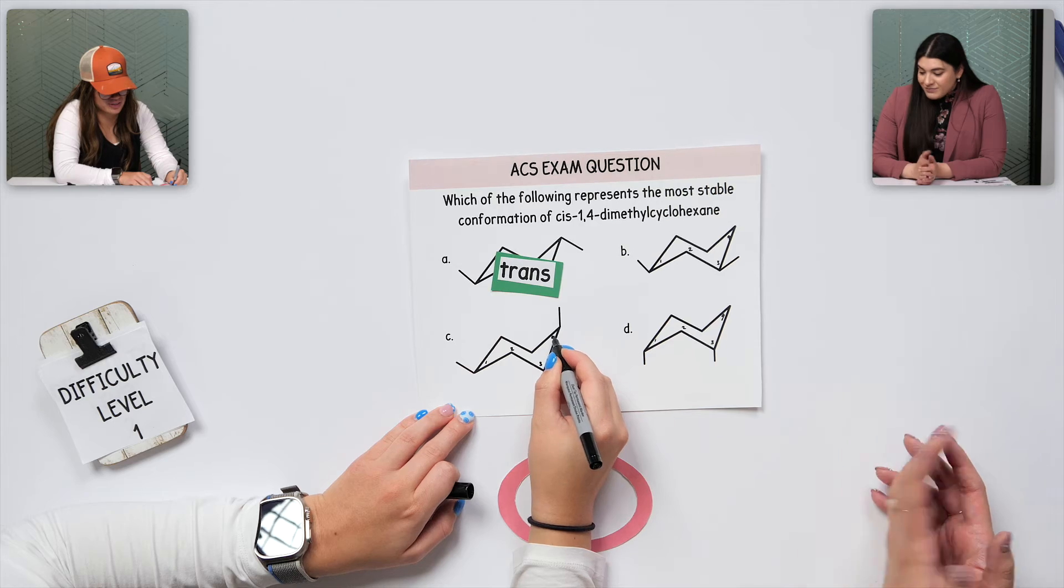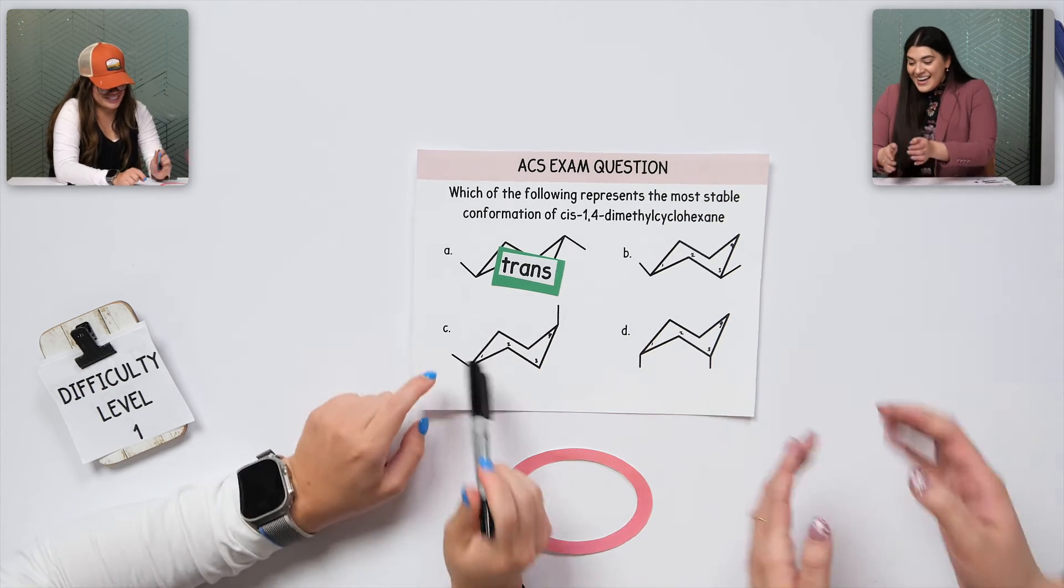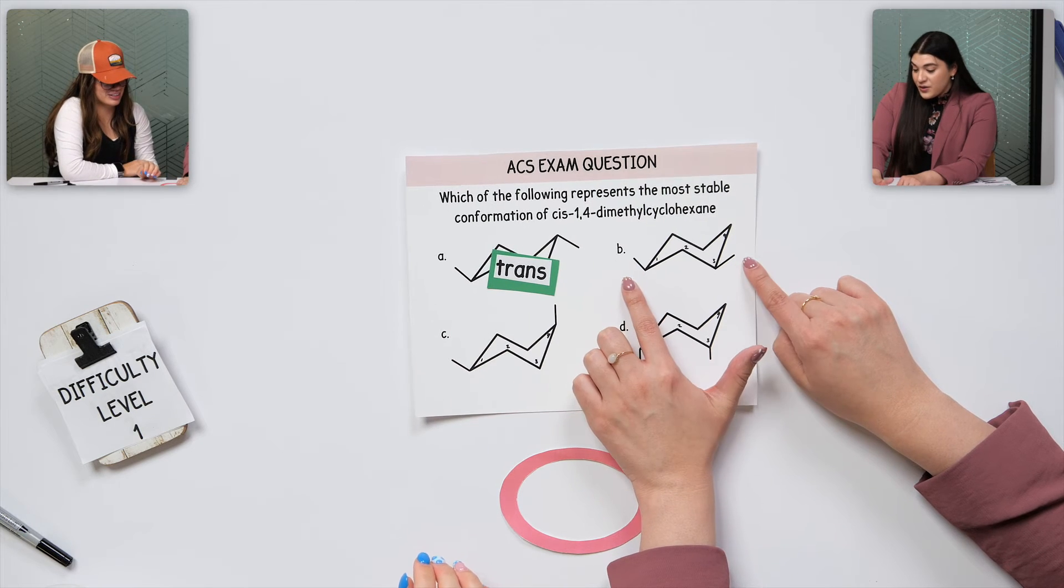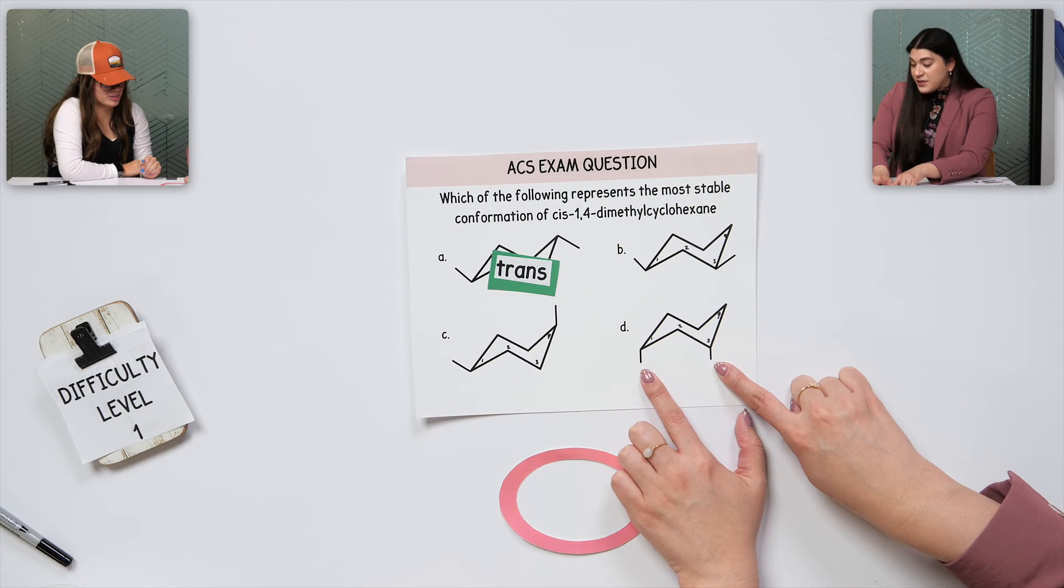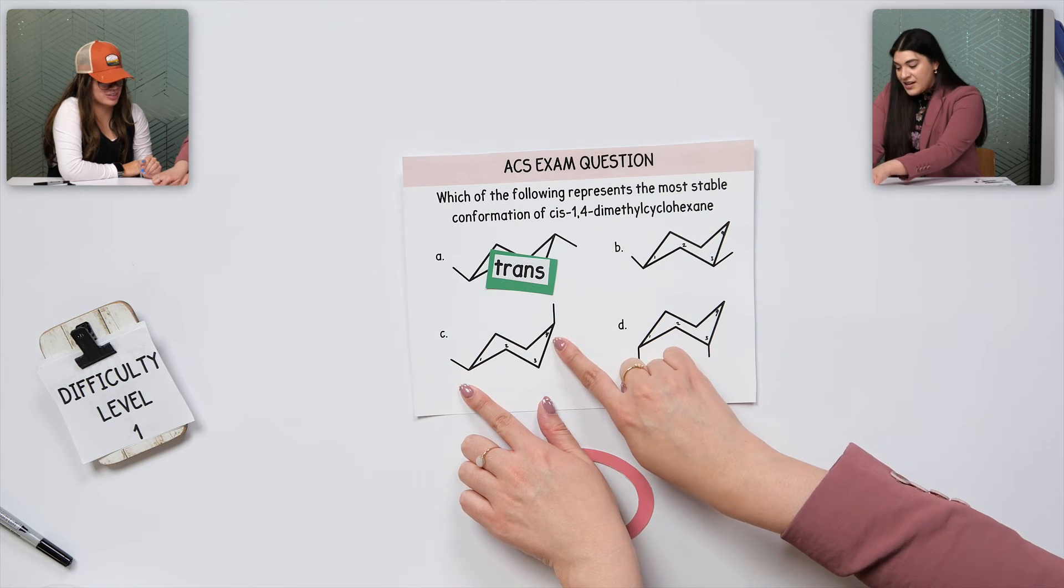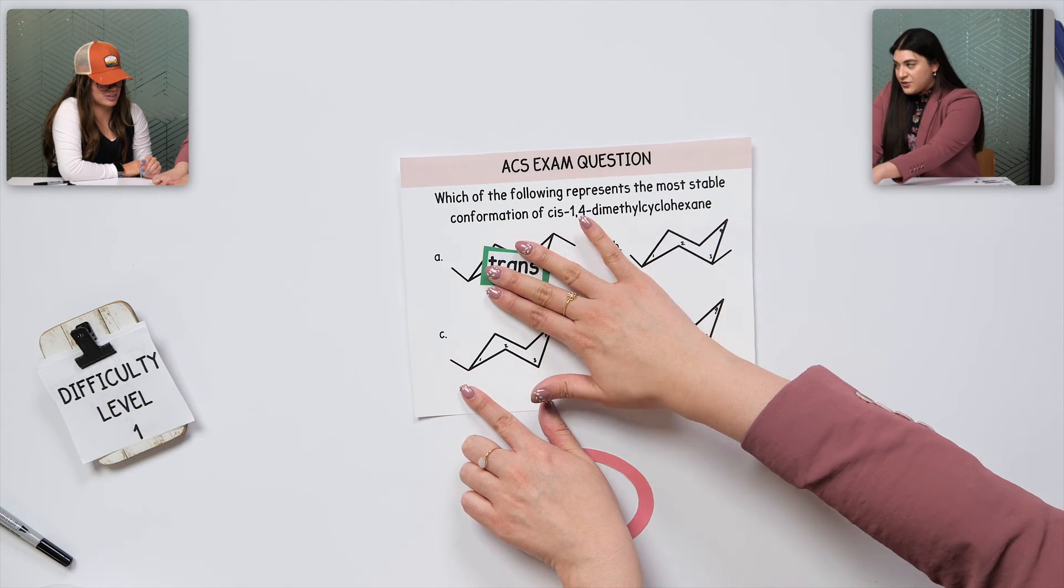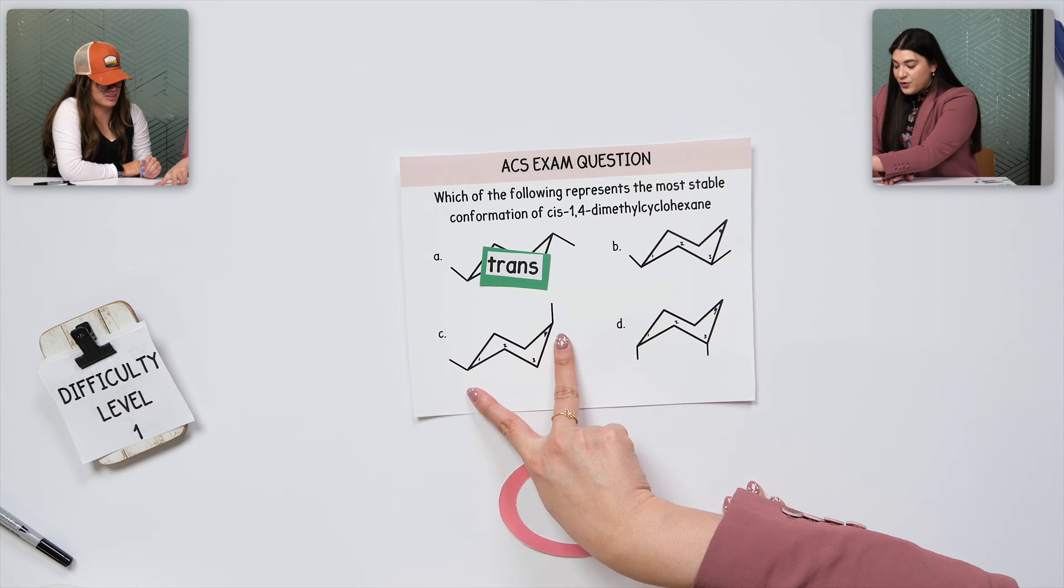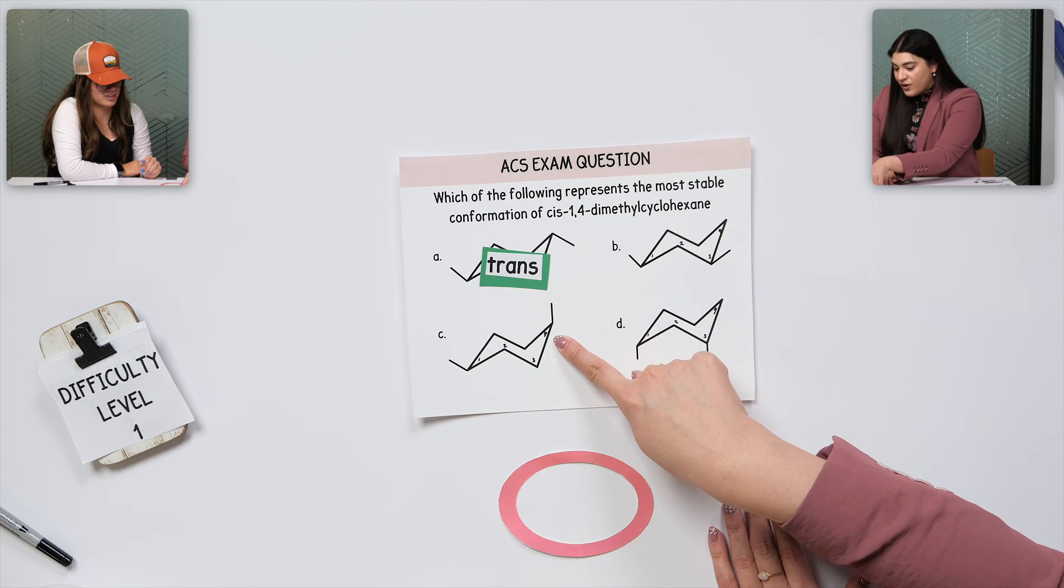So it'd be this one. Perfect. This one. And the main thing is just because of the numbering. You did see that, sure, this is cis because they're both going in the same direction. This is also cis because it's going in the same direction. So we knew this one was out because that's trans. The next thing, perfect, you have to have two methyl groups, one at one and another one at four. Okay.